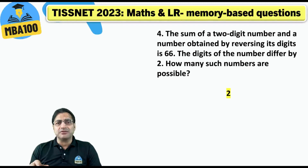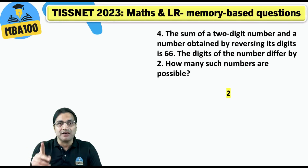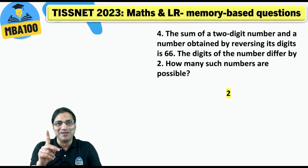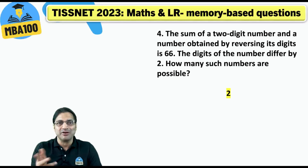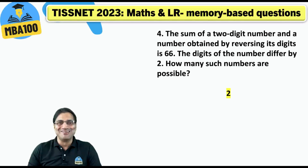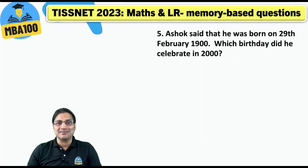Here the answer is of course two numbers: 24 and 42. By the way, how many of you marked just one as your answer? One would be incorrect. The answer should be 24 and 42. Hope you didn't mark one as your answer.